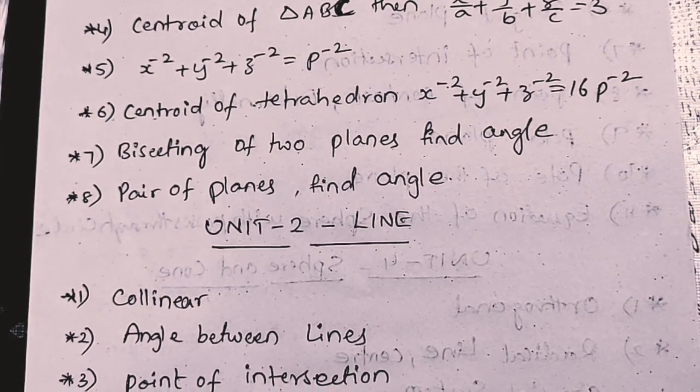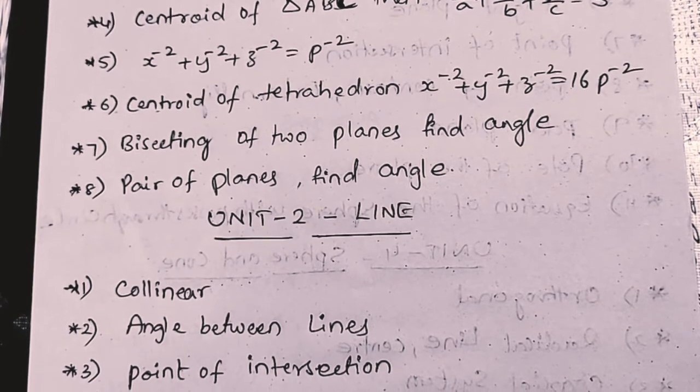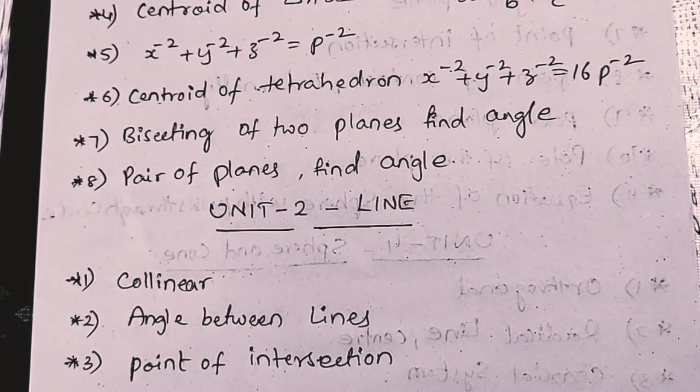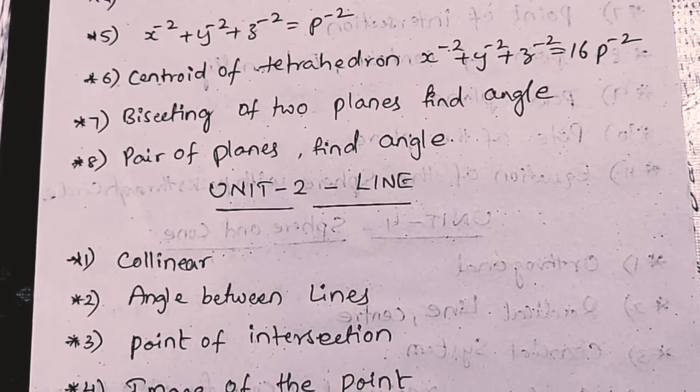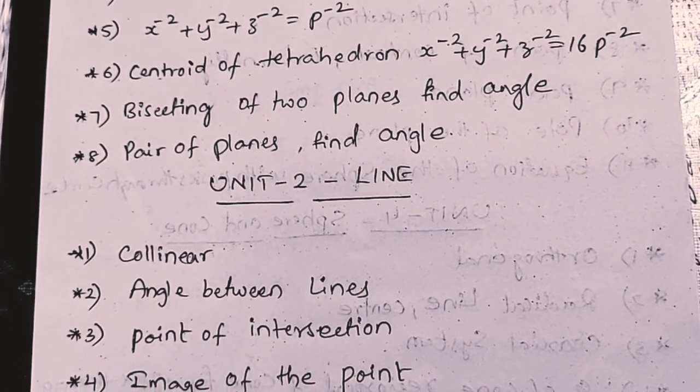Next, Unit 2. Lines topic are coming. Collinear, angle between lines, point of intersection, image of the point.